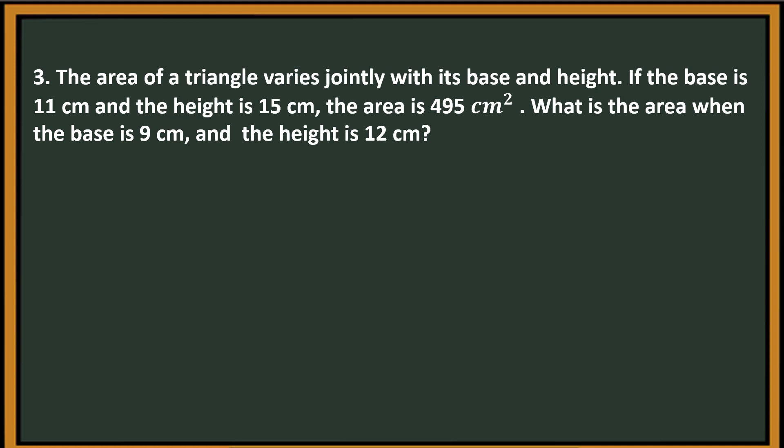Problem number 3. The area of a triangle varies jointly with its base and height. If the base is 11 cm and the height is 15 cm, the area is 495 cm². What is the area when the base is 9 cm and the height is 12 cm? First, we're going to assign variables: area of a triangle — capital letter A; base — small letter B; height — H. Actually, any variable can be used. We're going to translate this into an equation. The keyword is 'varies jointly,' so A is equal to K times B times H, where B is base, H is height, and A is area.